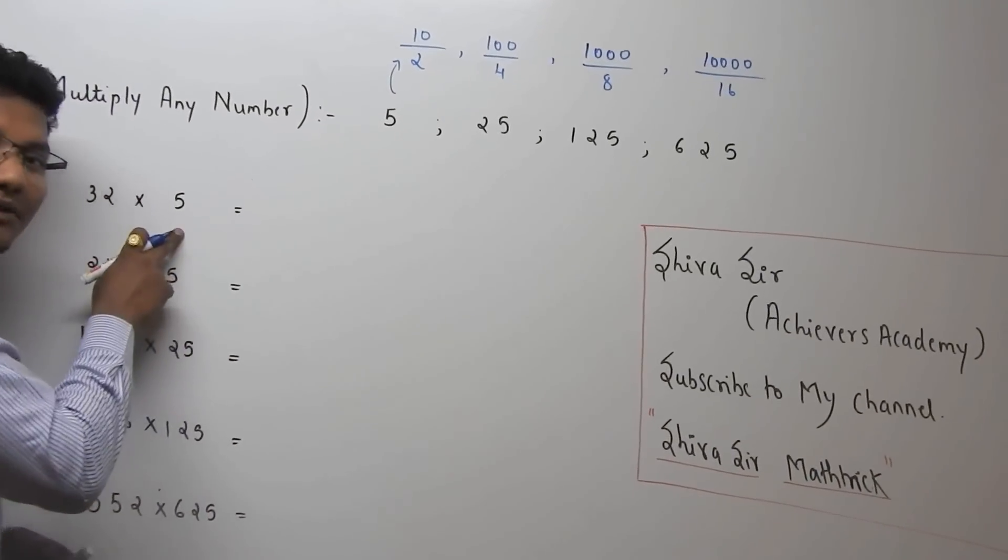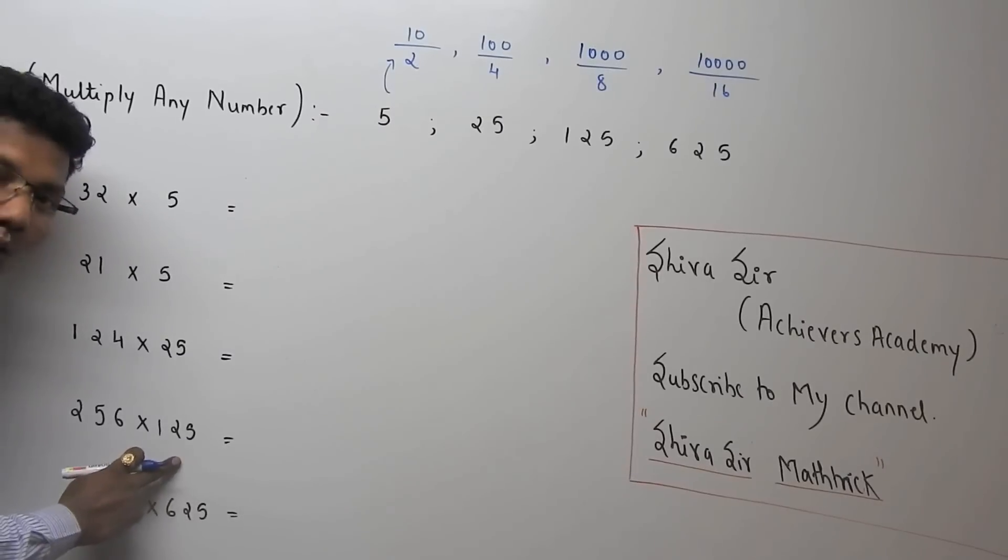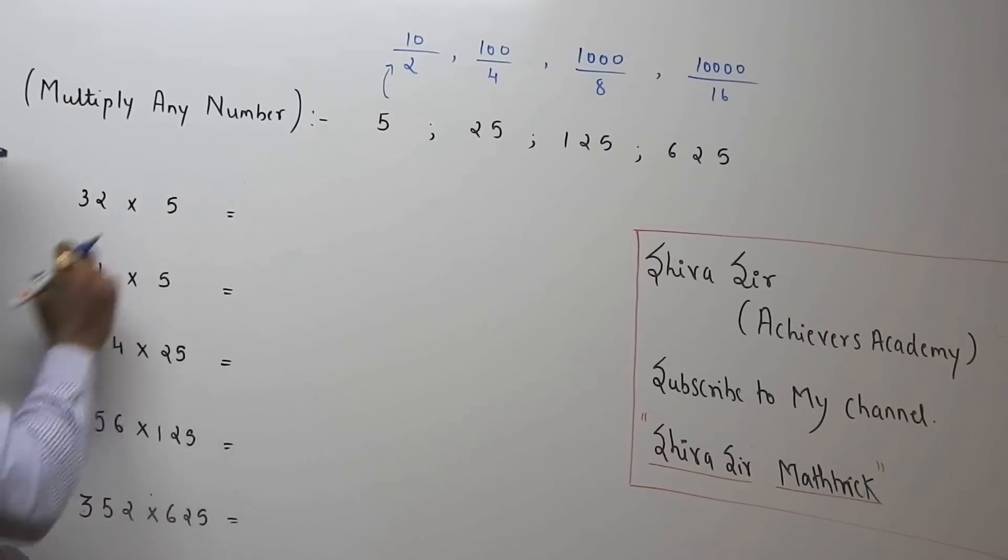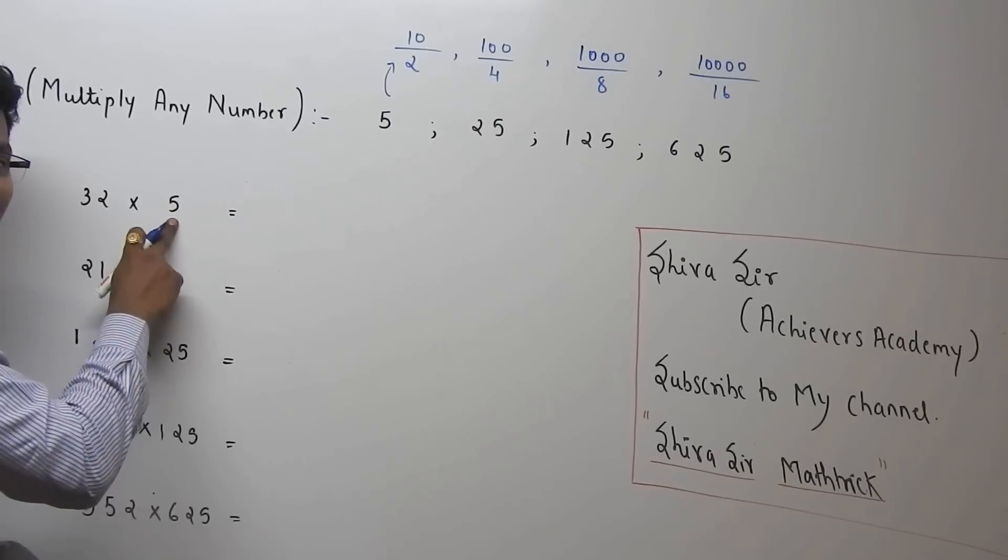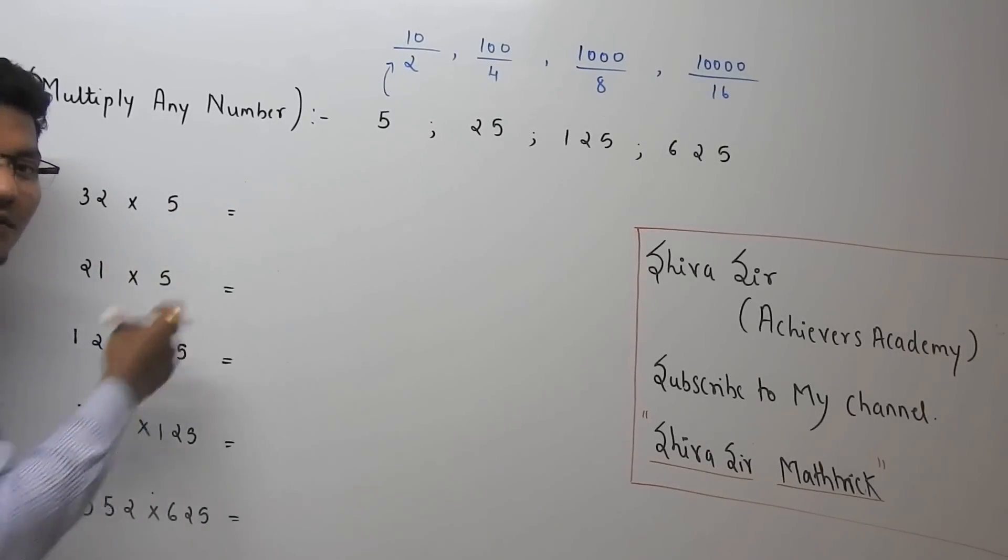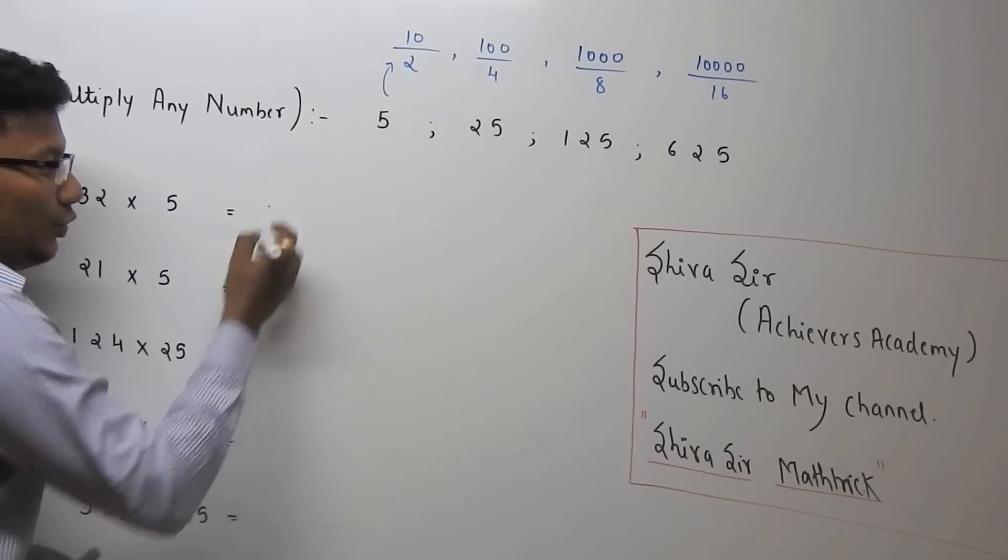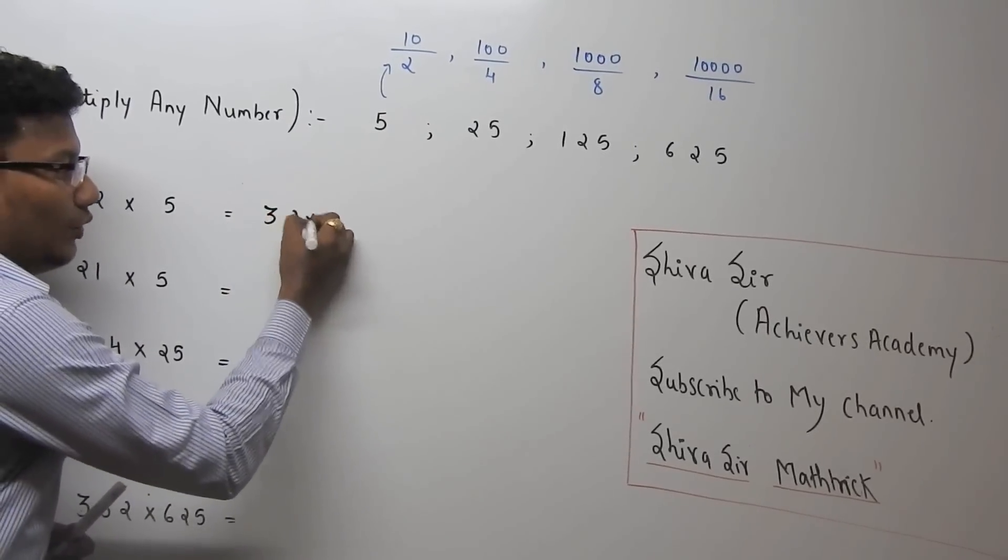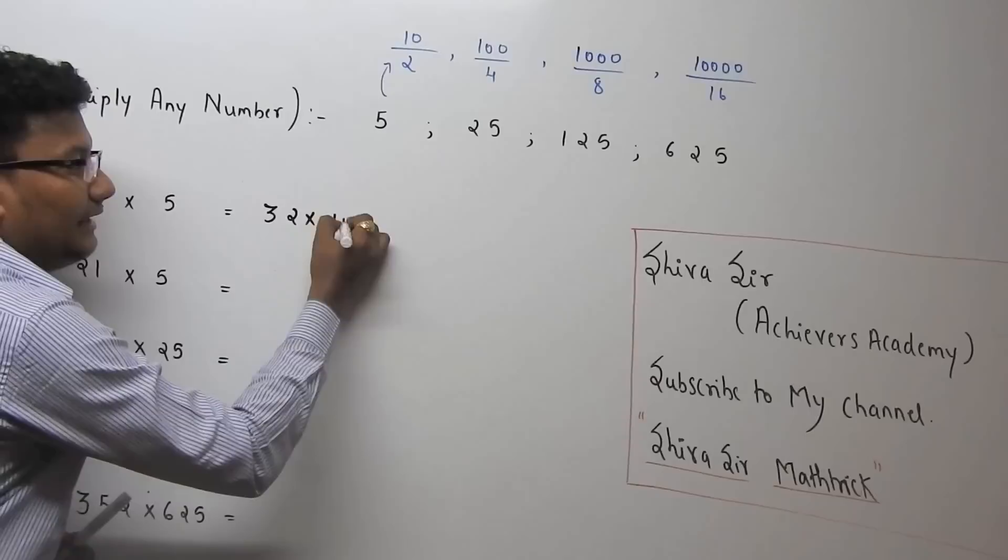Now see how to multiply any number by 5, 25, 125, 625. 32 into 5. So break this 5, write this 5 in terms of 10 by 2. So 32 into, I will write this 5 as 10 by 2.